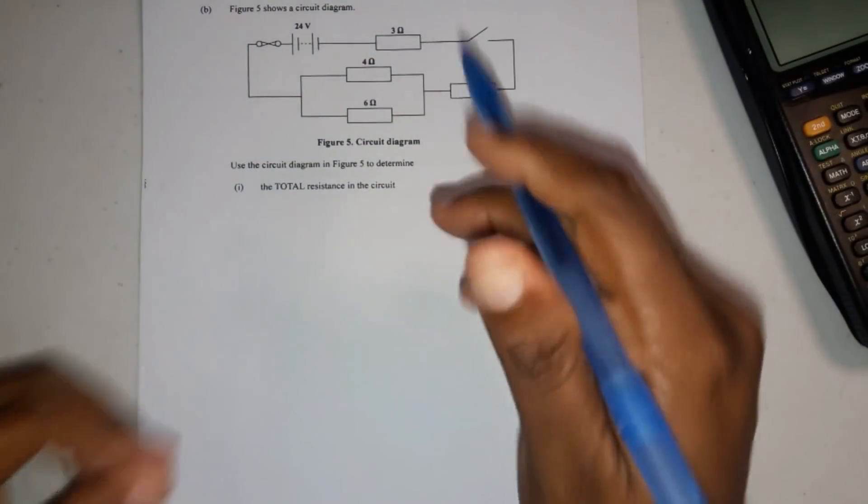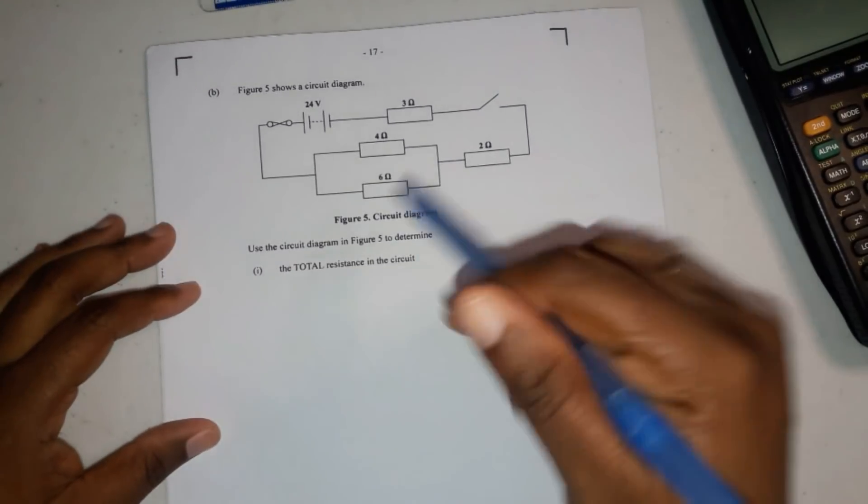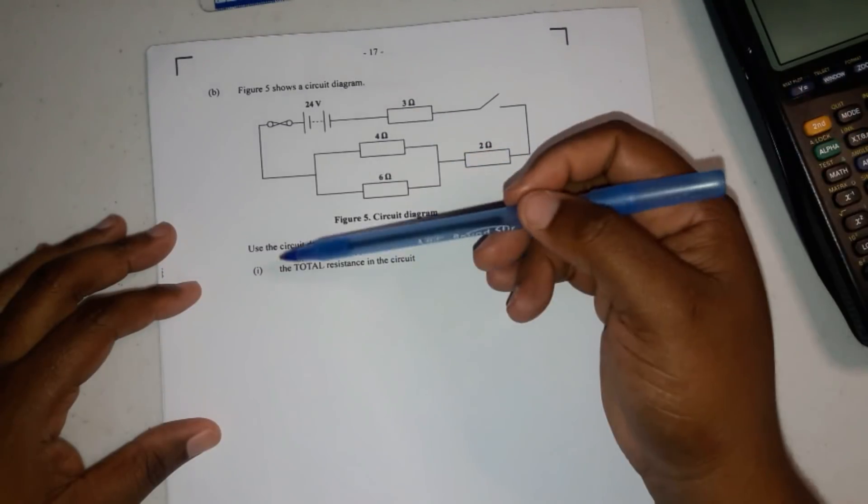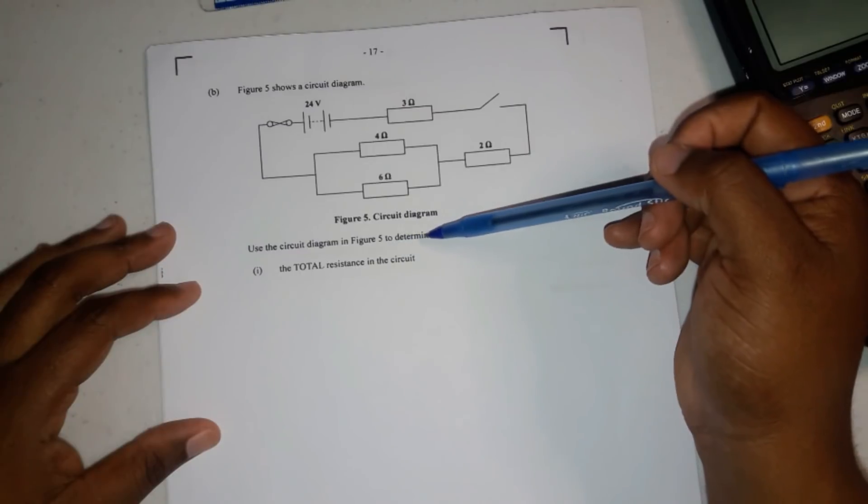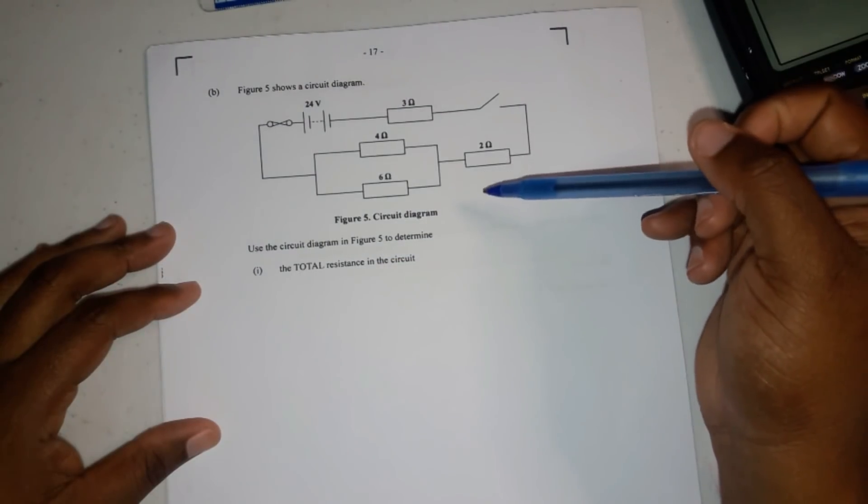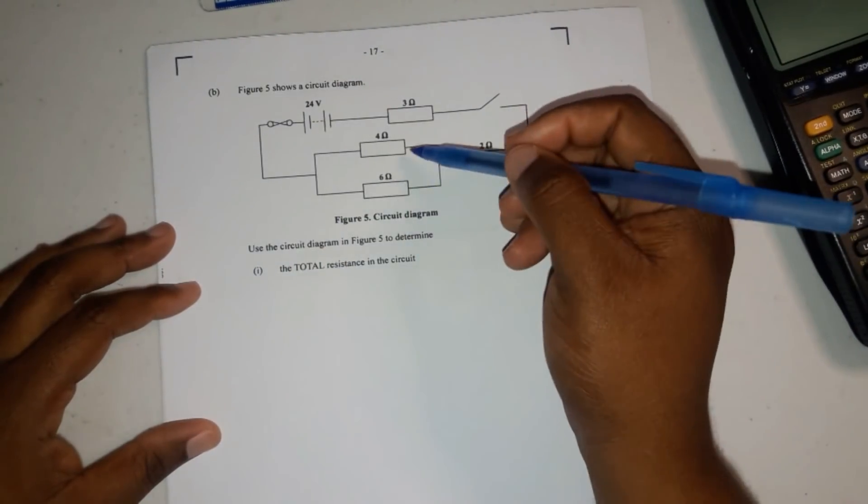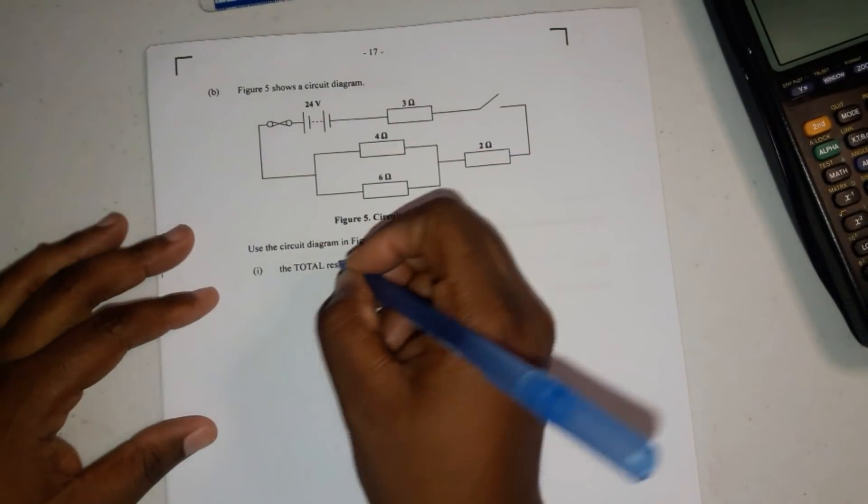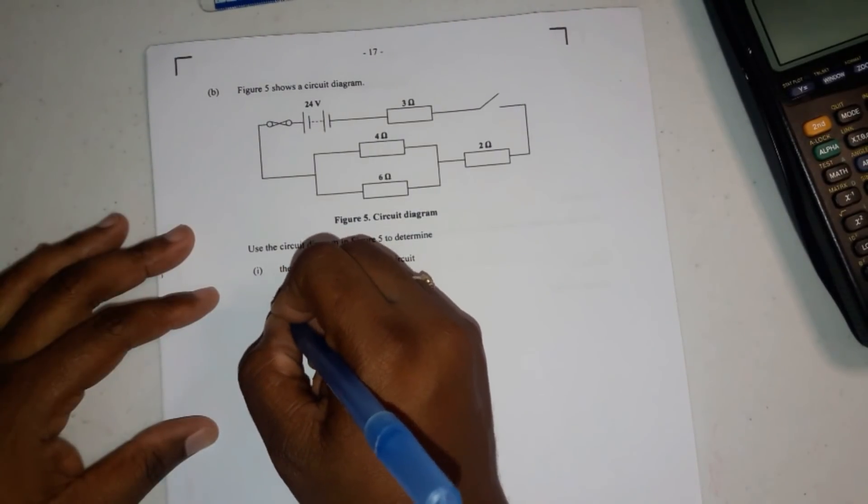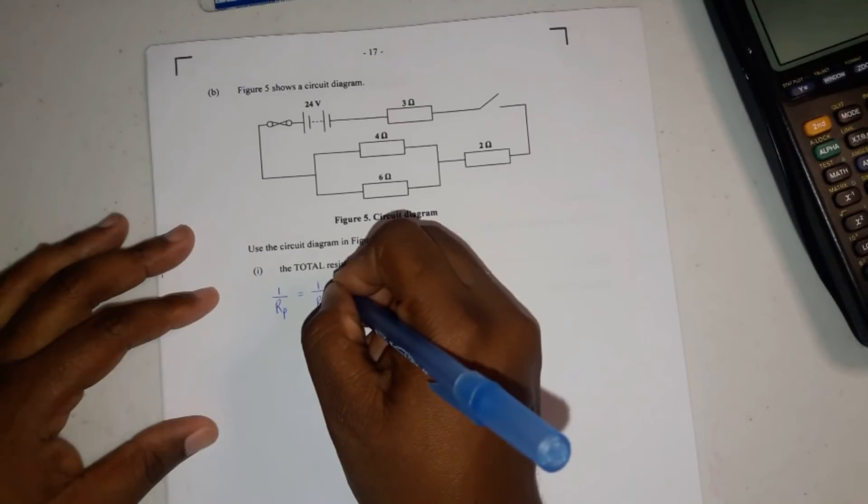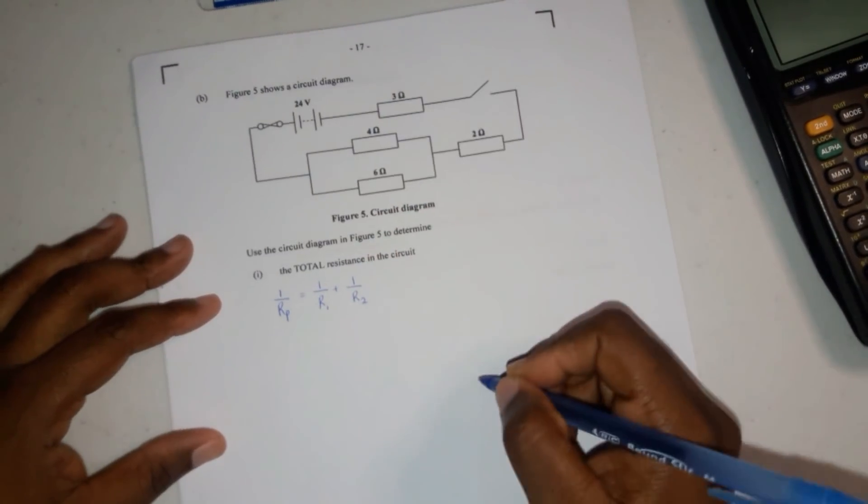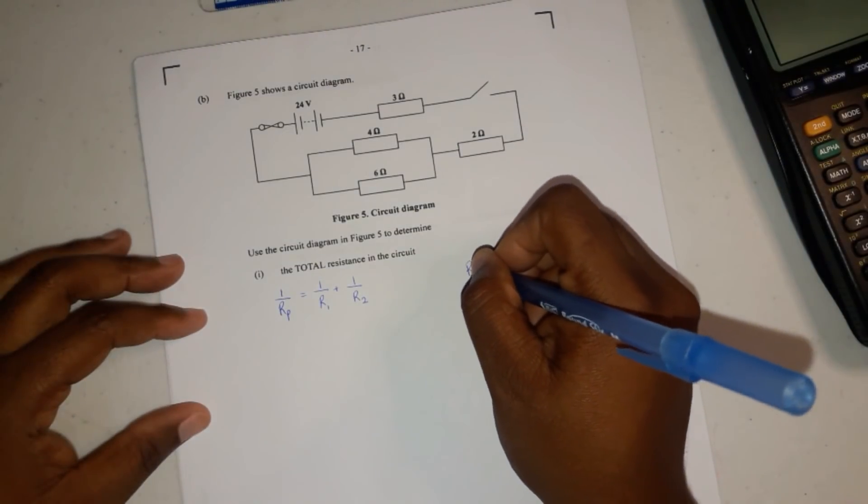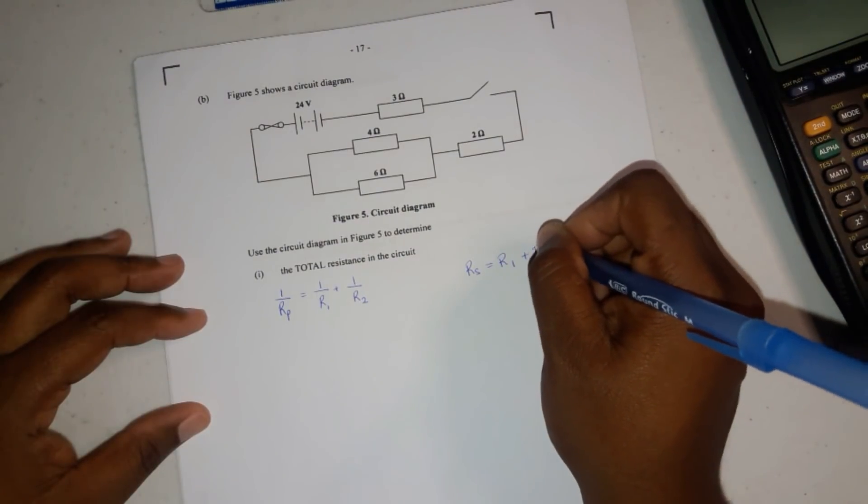And then here it says, figure 5 shows a circuit diagram. And we have 2 resistors in parallel and the other 2 in series. So it says, use the circuit diagram in figure 5 to determine the total resistance in the circuit. And it's pretty easy. All you've got to do is use the formula for parallel and use the formula for series. So, the formula for parallel is 1 over Rp equals 1 over R1 plus 1 over R2. And when you want to work out the resistors in series, R equals R1 plus R2.